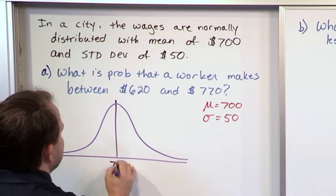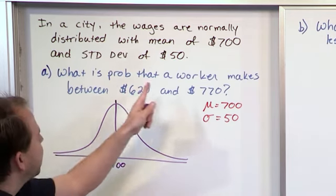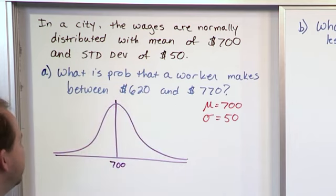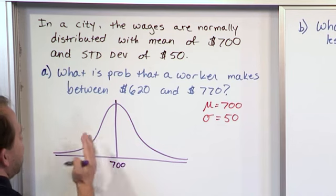The average value is $700, right? And we're trying to find out what is the probability that a worker makes between $620 and $770. So $620 right here is going to be $80 away. So let's just call it right there, $620.